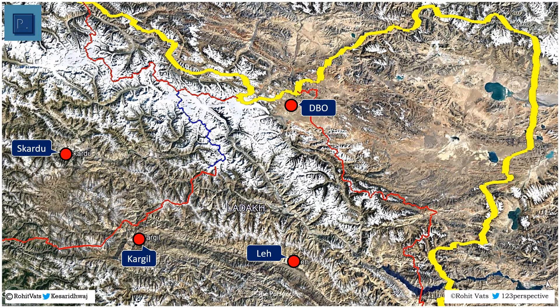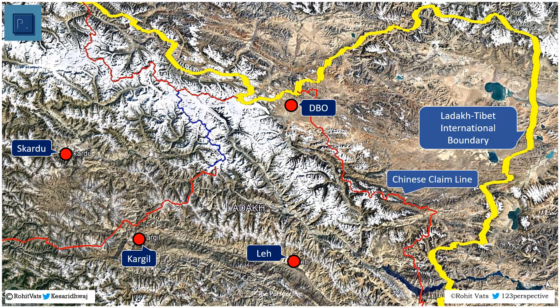The DBO sector is located north-east of Leh at an aerial distance of about 145 km. The road distance, on the other hand, is more than 250 km. The outer boundary is the historic Ladakh-Tibet boundary — this is India's claim line in eastern Ladakh. The inner red line corresponds mostly with the Chinese claim line in the sector. The red line further west is the Line of Control, or LOC, with Pakistan in the Pakistan-occupied Kashmir northern areas.